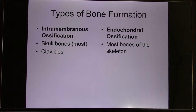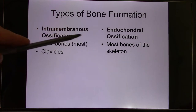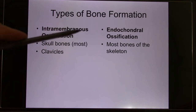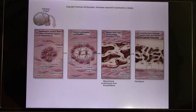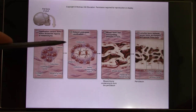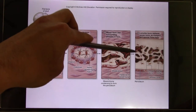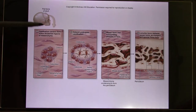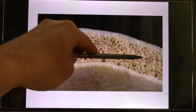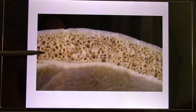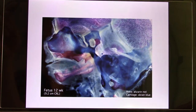Now let's look at bone formation. There are two different kinds: intramembranous ossification and endochondral ossification. Intramembranous ossification forms flat bones — they start thin like a piece of paper and gradually thicken. There's an ossification center and blood vessels grow in, forming spongy bone inside. A good example is the skull, which goes through intramembranous ossification.